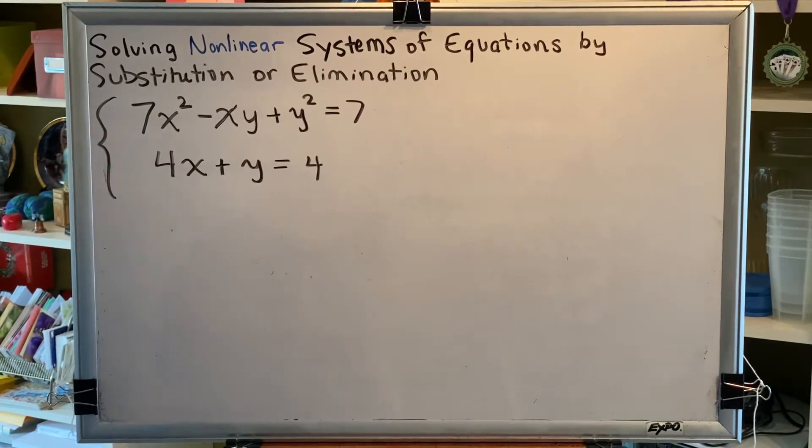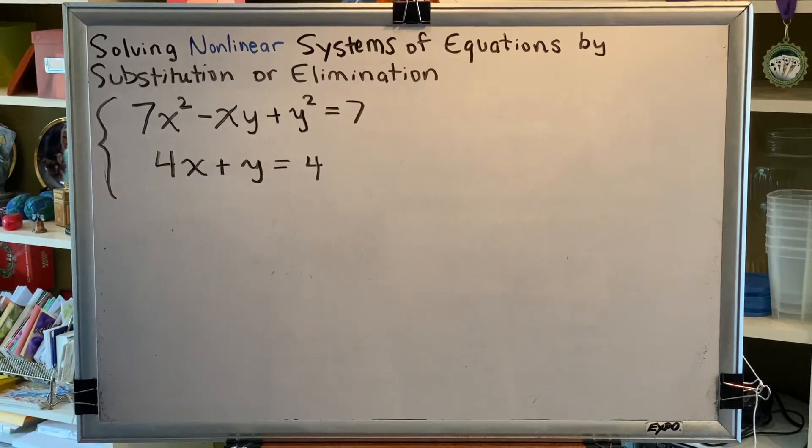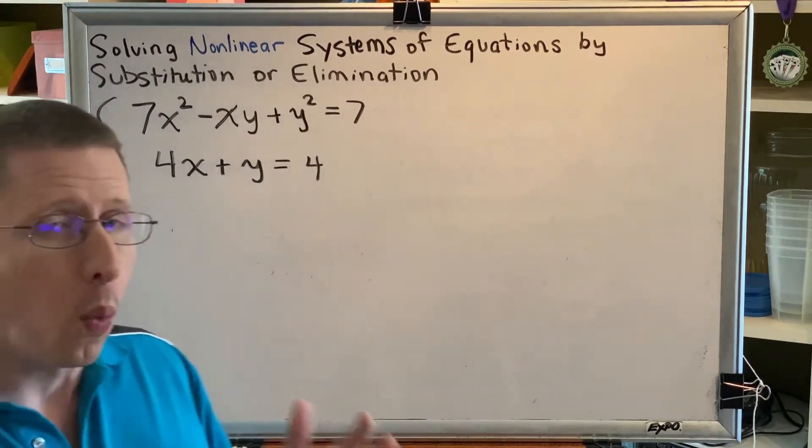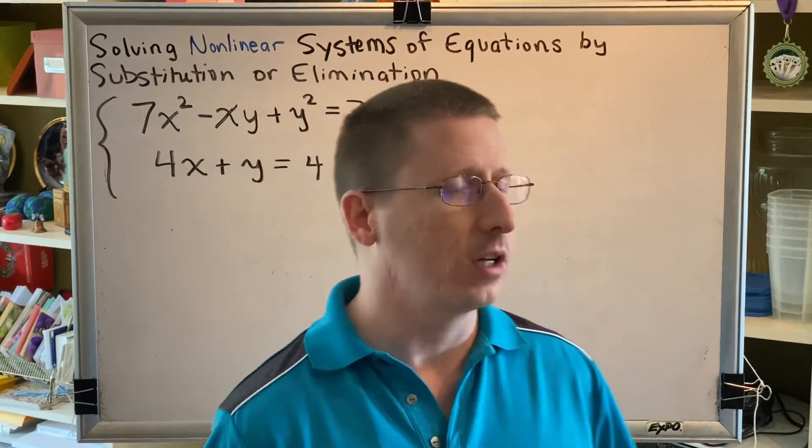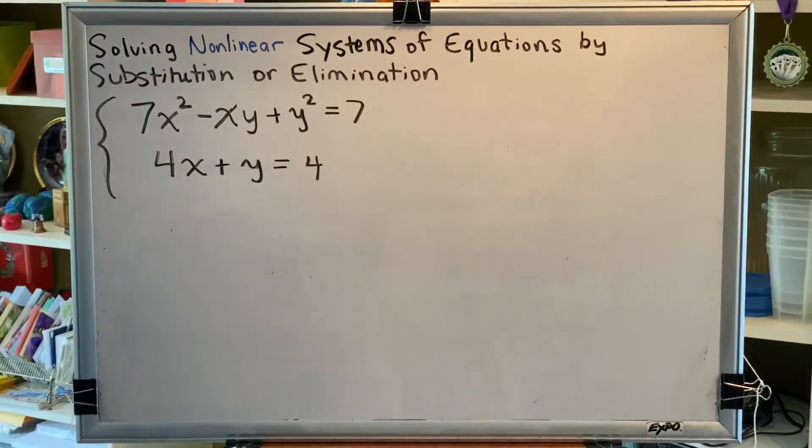The top equation is 7x squared minus xy plus y squared equals 7. The bottom equation is 4x plus y equals 4. The top equation is nonlinear. The bottom equation is linear. But if even just one equation is not linear, that makes the entire system nonlinear. So this is a nonlinear equation.